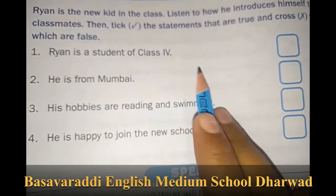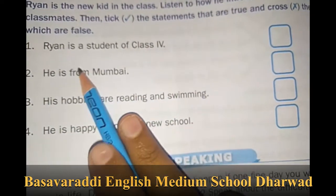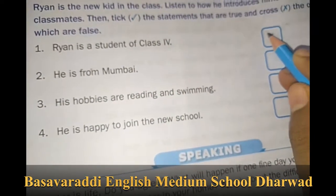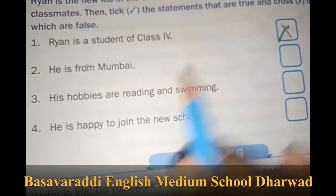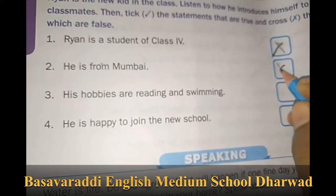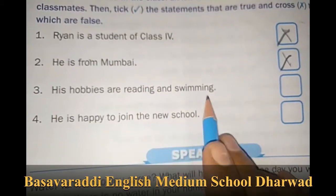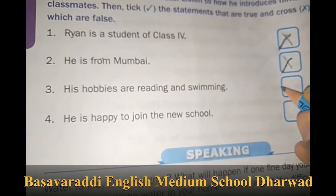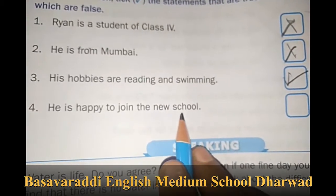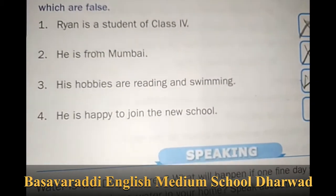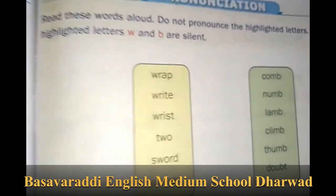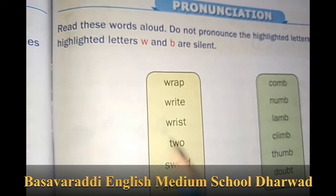Move on to the listening part. We have to write down true or false. Rian is a student of class 4 — Wrong. He is from Mumbai — Wrong. His hobbies are reading and swimming — Right. He is happy to join the new school — Correct.